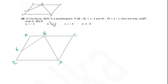Let's see this problem. In the figure, AEDC is a parallelogram. AB to BC is 1 to 2, AF to FE is 2 to 1, then the area of triangle ABF to area of triangle BCD.